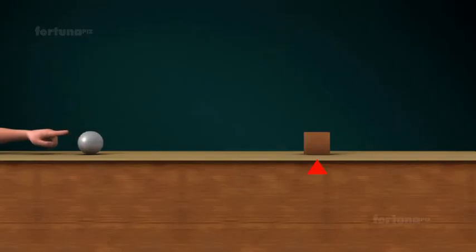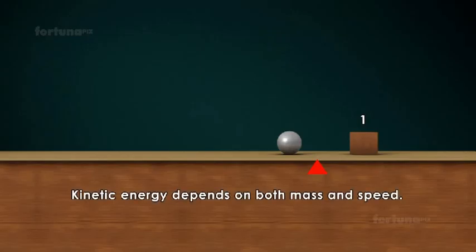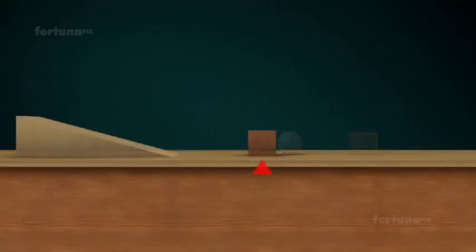The rolling ball, by virtue of its motion, is capable of doing work. Here it hits an object such as a small wooden block, pushing the object a bit beyond its initial position. The energy of this moving ball is its kinetic energy. An object's kinetic energy depends on both mass and speed.